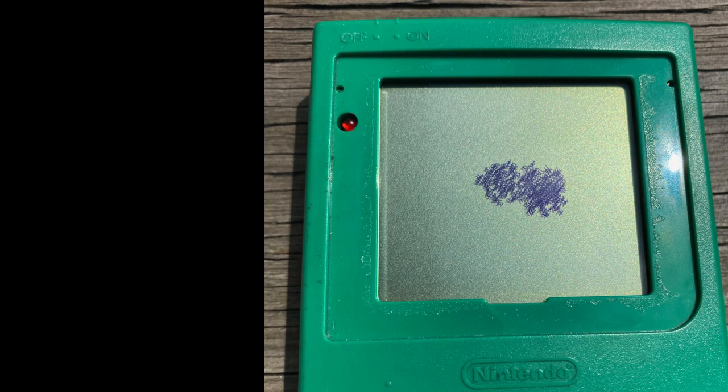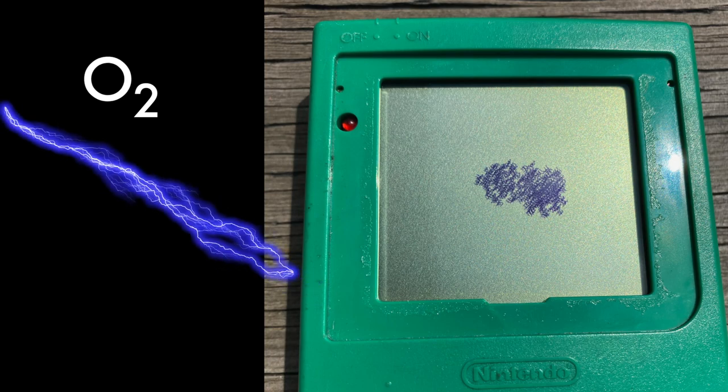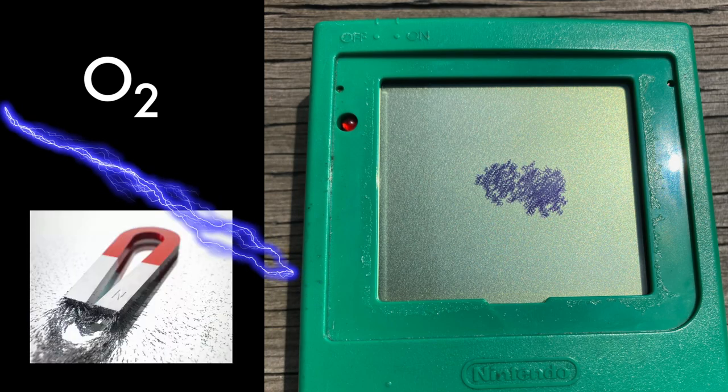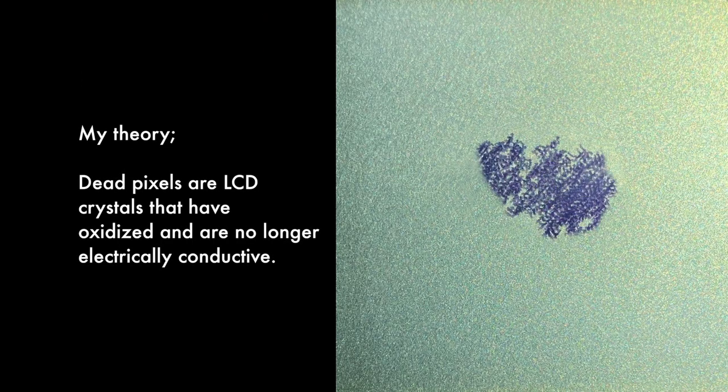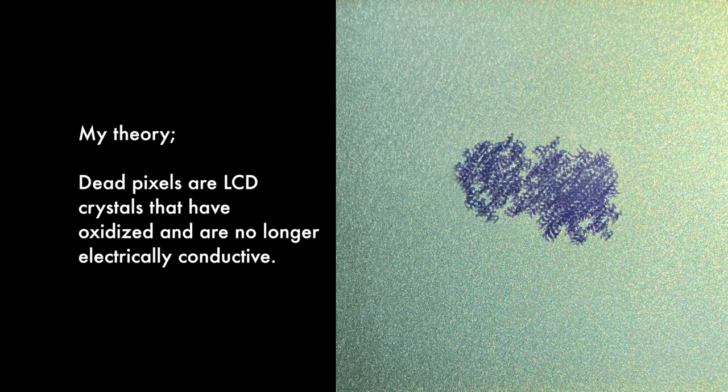And as for the dead pixels that you see starting in the middle of the screen, there has to be some catalyst that causes the oxidization to begin. Could be an oxygen molecule or static discharge or even something magnetic. It could be any of those things. Again, just to recap, my theory is that screen cancer or dead pixels is just LCD crystals that have become oxidized and they're no longer electrically conductive.